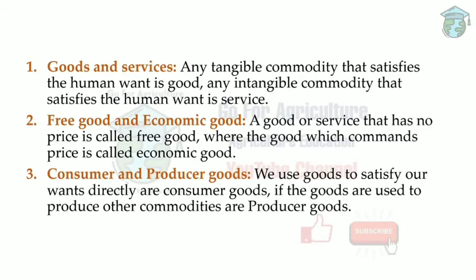Consumer goods directly satisfy your needs — for example, a pen to write, food when you're hungry, or water when you're thirsty. Within a short period of time they satisfy your wants. Producer goods are used to produce other commodities — for example, a tractor is used to plow the soil to produce paddy. You're using one commodity, the tractor, to produce another commodity, paddy.